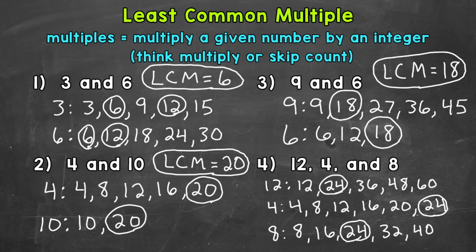So if you don't see a least common multiple, you can always extend your lists until you find it. So for number four, our LCM equals 24.